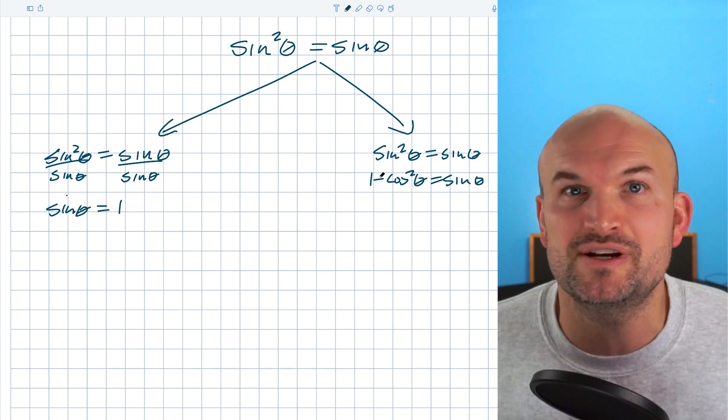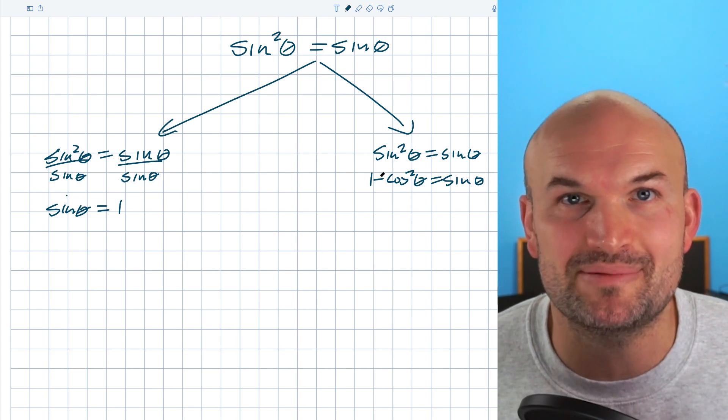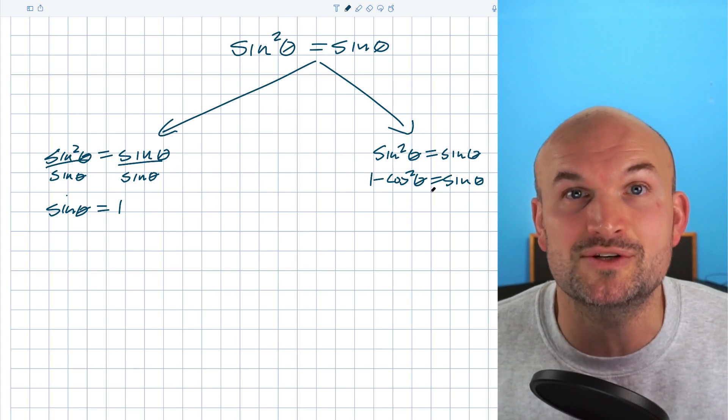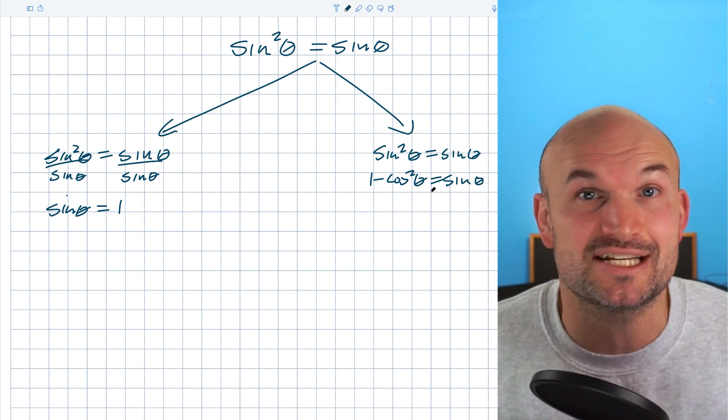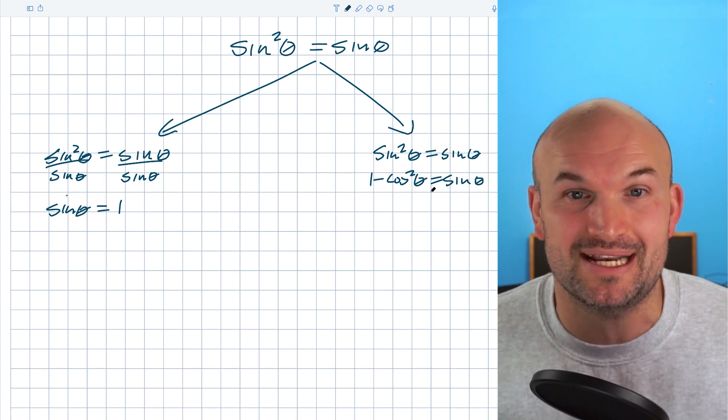Now we're trying to solve an equation where we have two different trigonometric functions and that's just not going to be ideal. What we're going to want to do is solve using the same trigonometric function. In this case it's already written in sine so we're going to want to keep it in that.